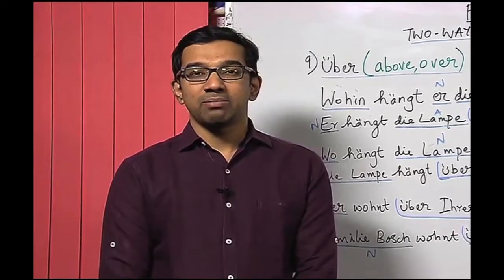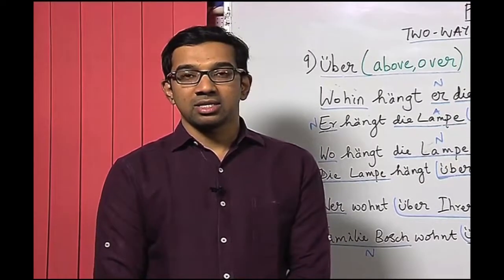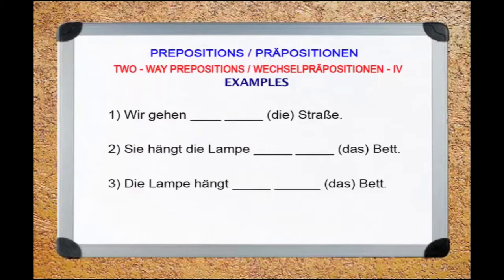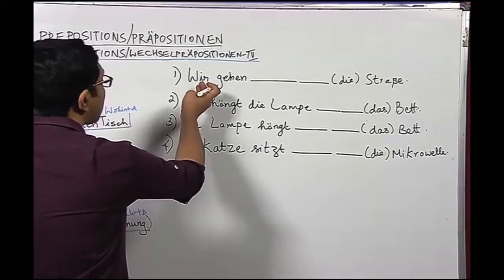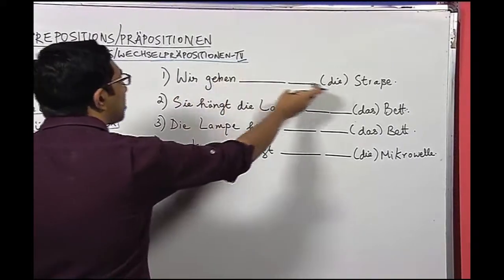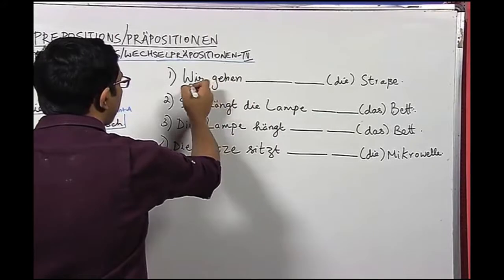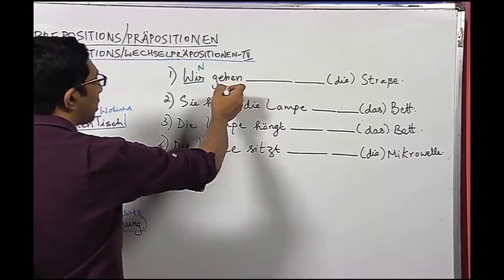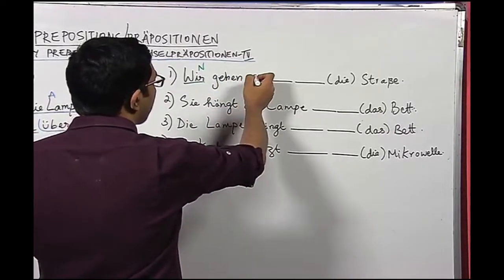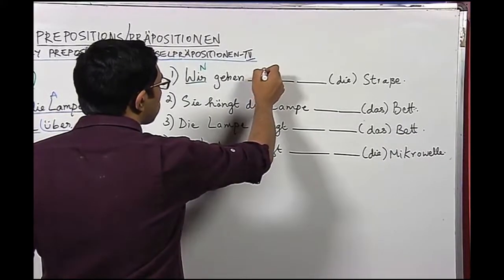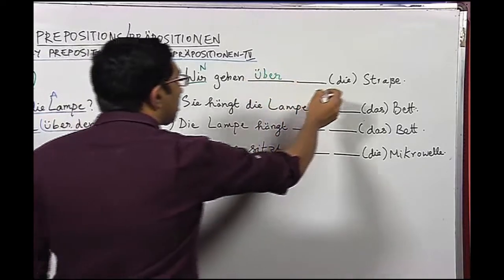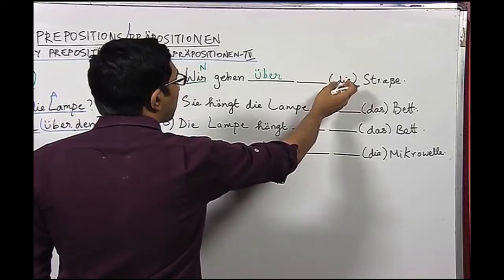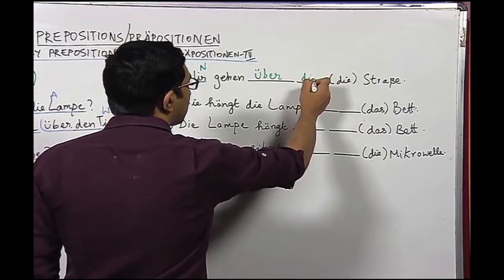Now let us do some exercises for the preposition 'über' in dative and accusative. Sentence number one: Wir gehen über die Straße. The nominative is 'wir', and the verb 'gehen' is a movement verb, so we use accusative. 'Über' is used as an accusative preposition. The article 'die' in nominative remains 'die' in accusative, so we have 'über die Straße'.